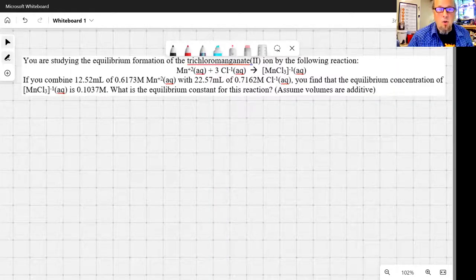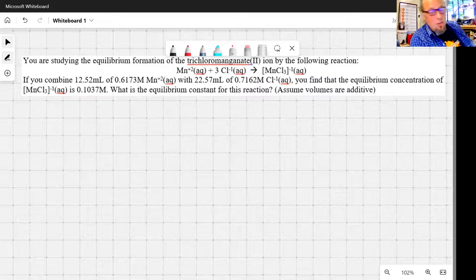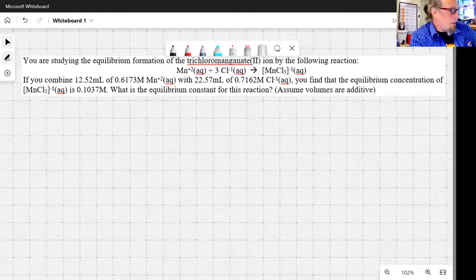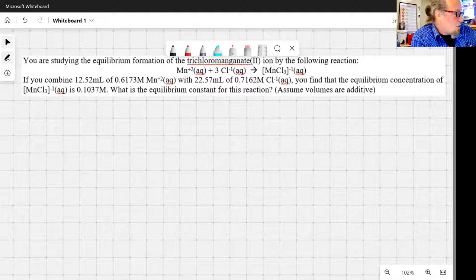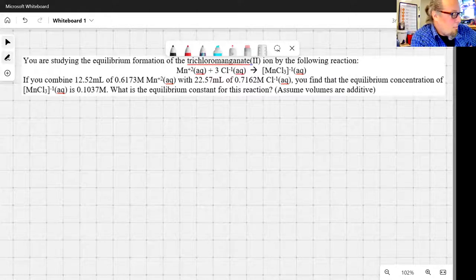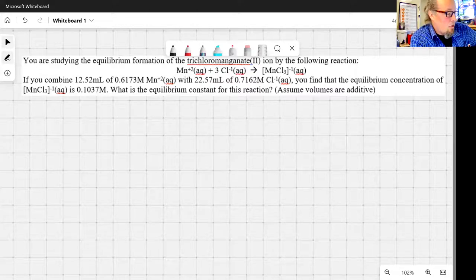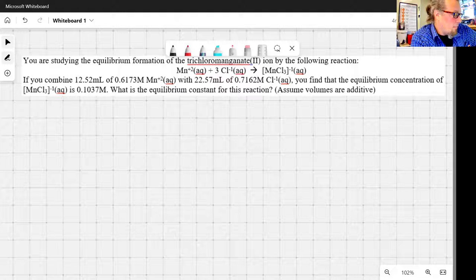Alright. So here we've got a pretty typical equilibrium problem. You're studying the equilibrium formation of the trichloromanganate(II) ion by the following reaction, chemical reaction given there, manganese plus 2 aqueous plus 3 chloride ions aqueous gives us trichloromanganate(II) ion.